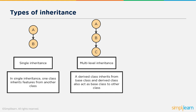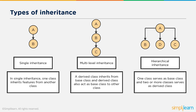This is very effective when you go for inheritance in big programs. And lastly, we have hierarchical inheritance. In this, one class serves as the base class and two or more classes serve as derived classes. As you can see, class B, class D, and class C have a single base class A. So three classes inherit properties of a single class — this is called hierarchical inheritance.